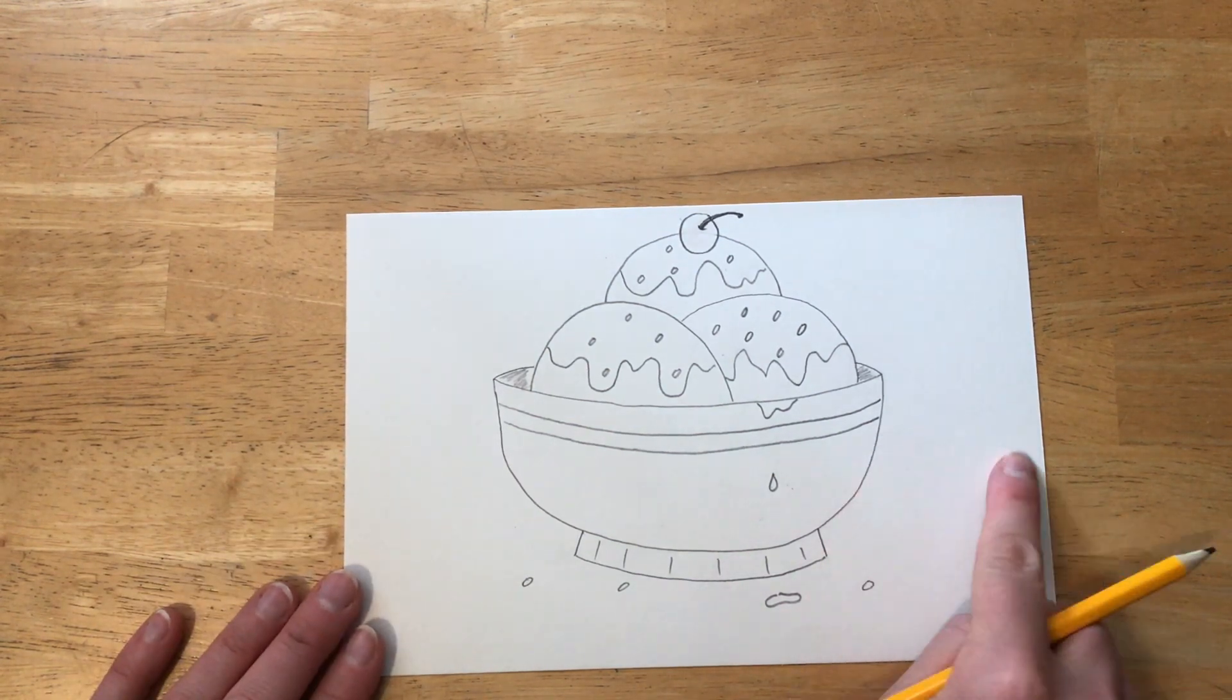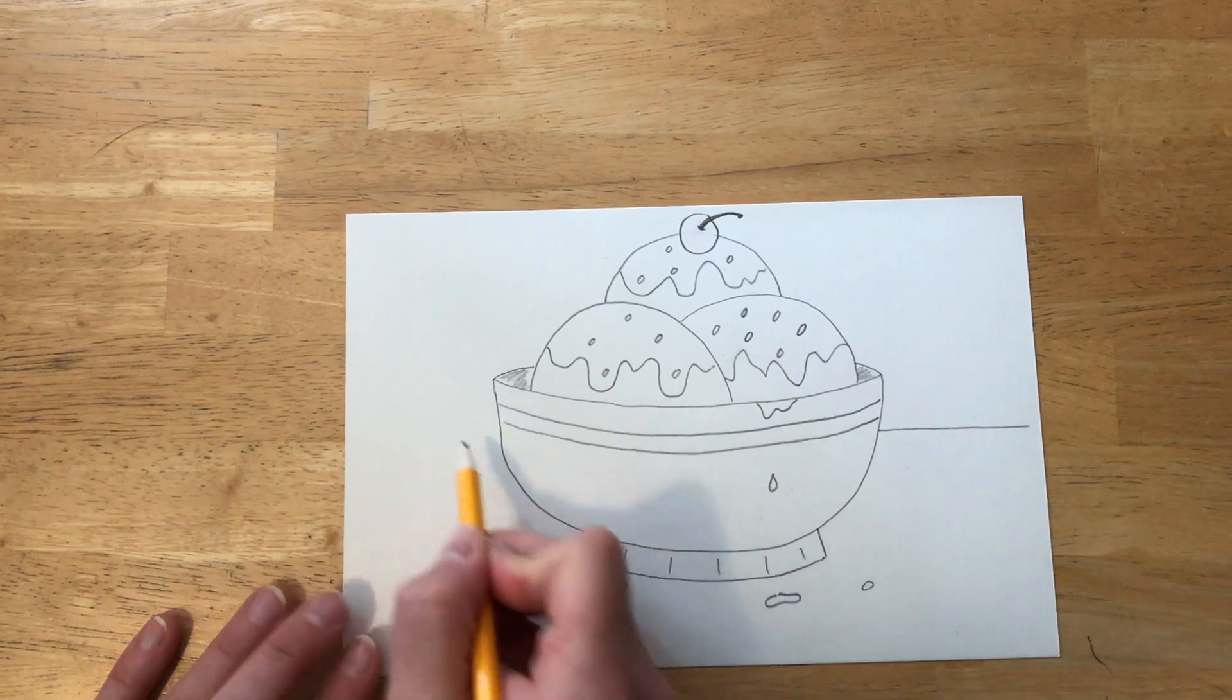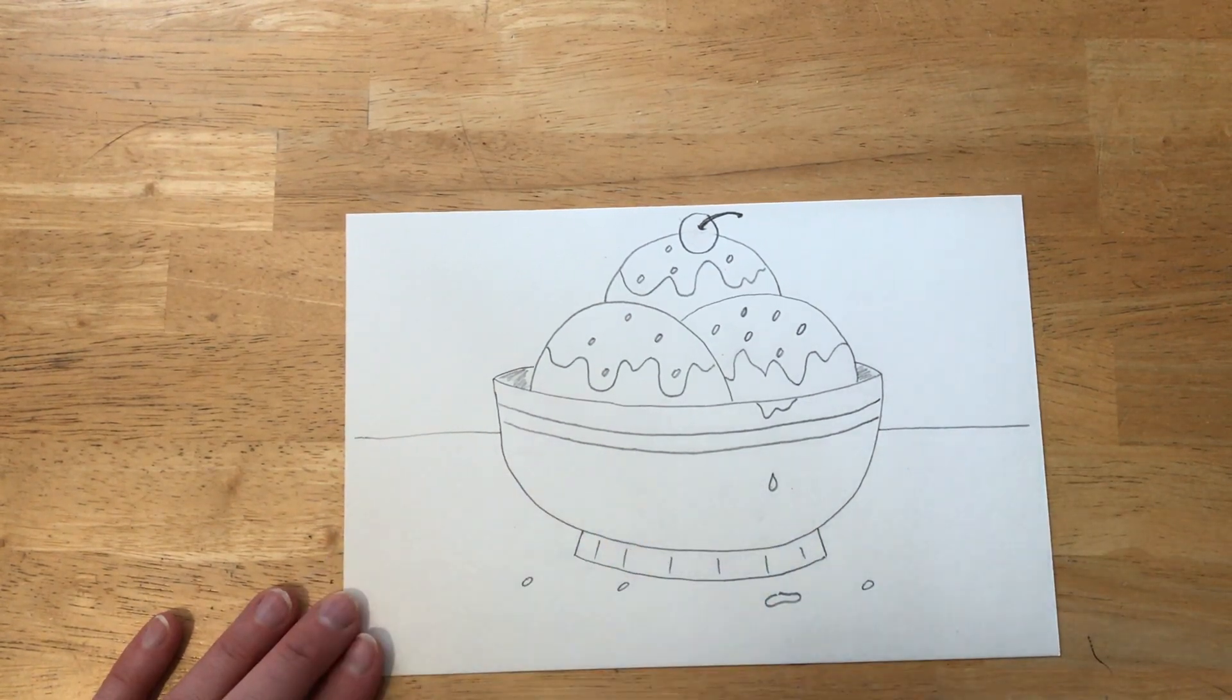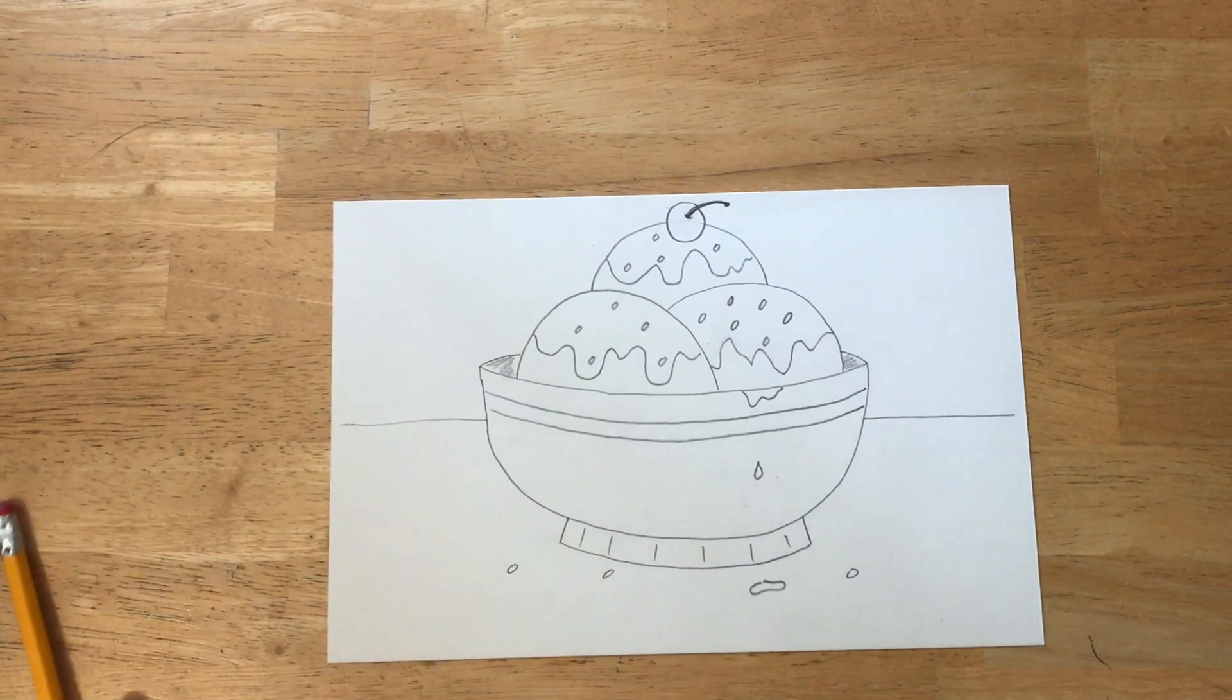Right now my ice cream is floating on the page. I am going to make two straight horizontal lines that come out from the side on the left and the right to make the table.